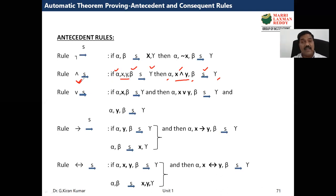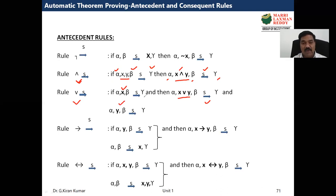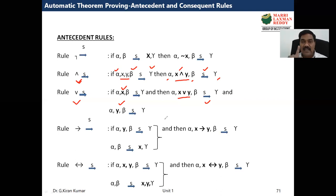If AND is after the logical sequence, that is a different consequent rule. For OR before the logical sequence — if x OR y is present — then we get two rules: one keeps x on the left side with alpha, beta, gamma as they are, and the second keeps y with alpha, beta, gamma as they are. So we equivalently get two formulas.